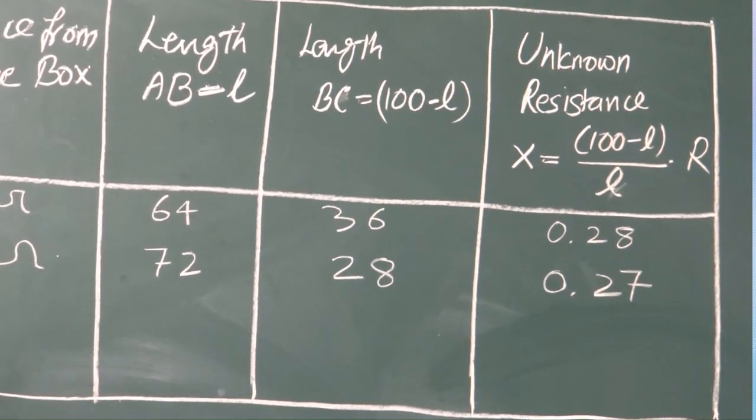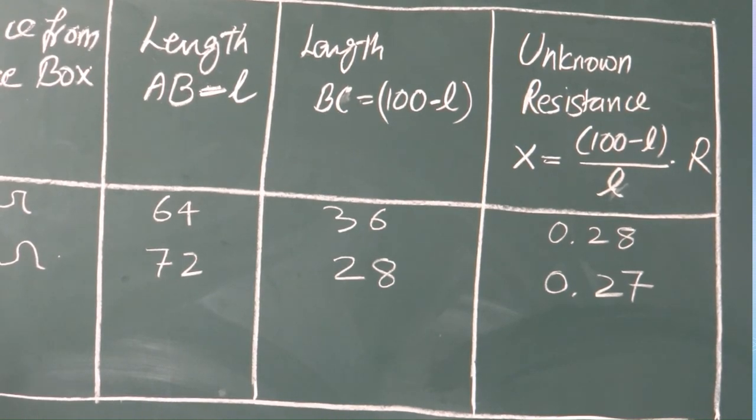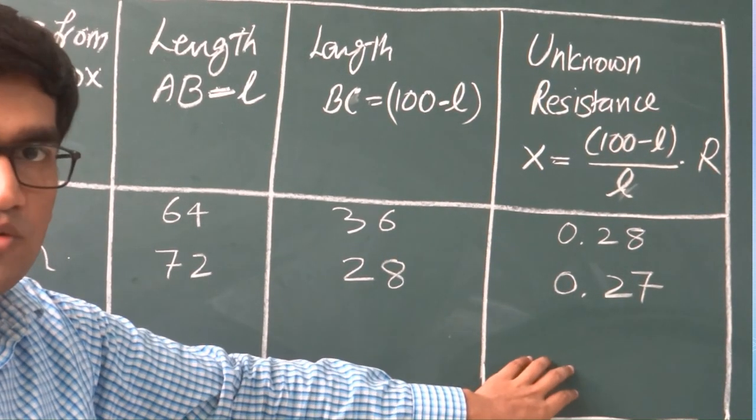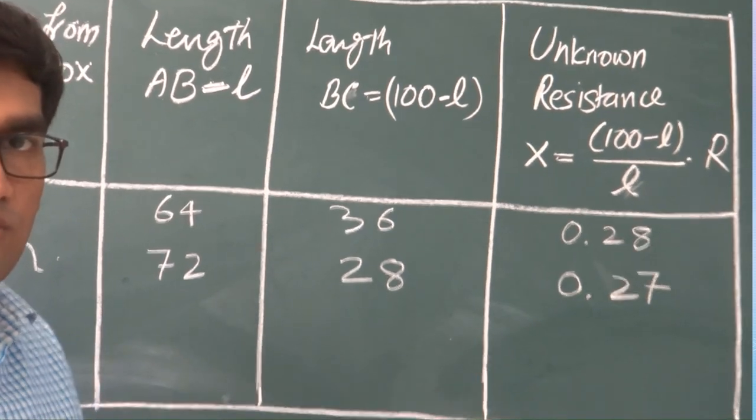Similarly proceed and take four sets of readings and take the mean of this. This will give you the value for your unknown resistance.